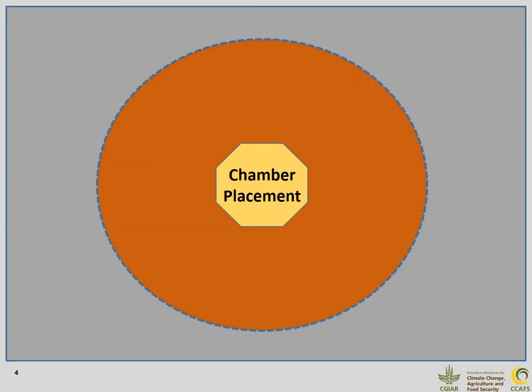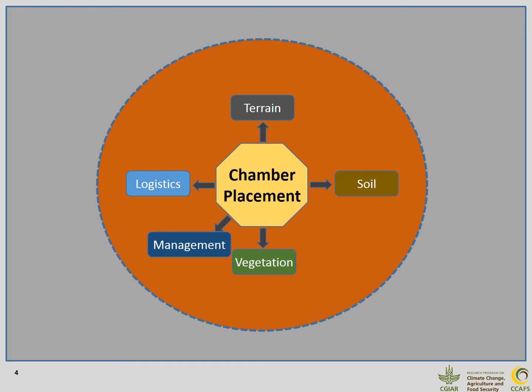Gas flux measurements using chambers are rather tedious. We should be very careful to think about where to place our chamber in an experimental field to be representative for the given plot. Factors to consider are terrain, soil, vegetation, management, and logistics. Logistics refers to accessibility—how we access the chamber to do flux measurements and how this will affect properties or management of the site itself.